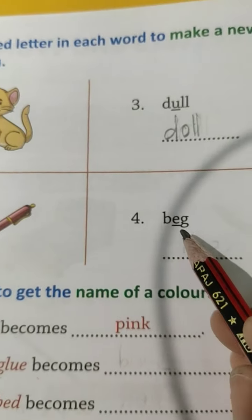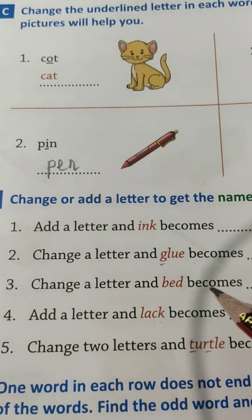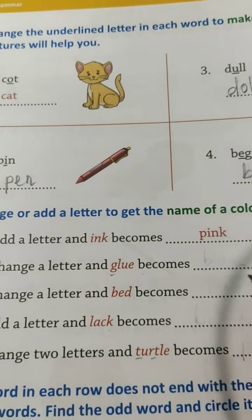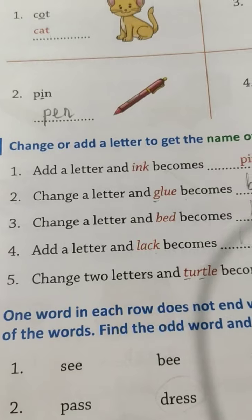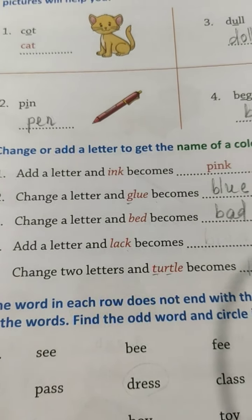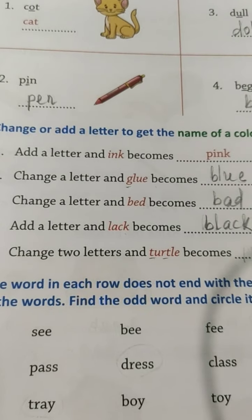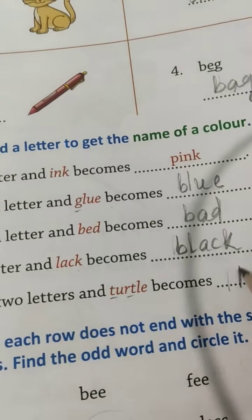Next one: change or add a letter to get the name of a color. The first one is done for you — add a letter and ink becomes pink. Number 2: change a letter and glue becomes blue. B-L-U-E. Blue. Number 3: change a letter and bad becomes red. Number 4: add a letter and lack becomes black. B-L-A-C-K. Number 5: change two letters and total becomes purple. P-U-R-P-L-E. Purple.